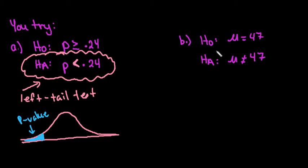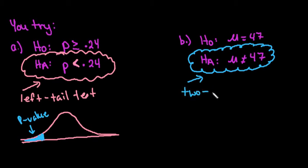And the last one that we would do is that the alternative is the mean is not equal to 0.47. Since it's not equal, this tells us that it is a two-tailed test.